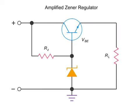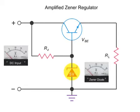An amplified Zener regulator controls voltage levels across a circuit. The regulator gets its name from its primary component, the Zener diode. The Zener diode is a fixed diode that maintains a given voltage value, no matter what the unregulated DC input might be.